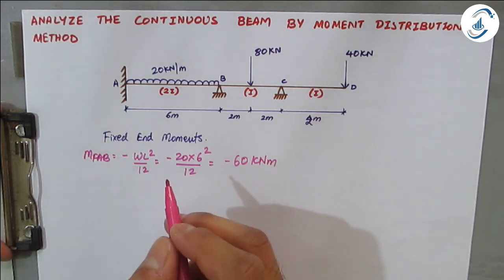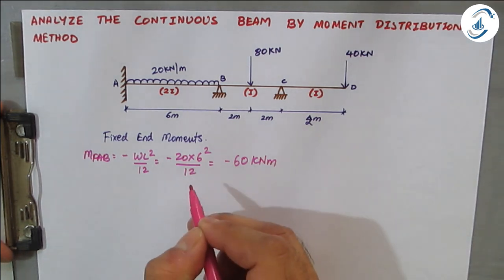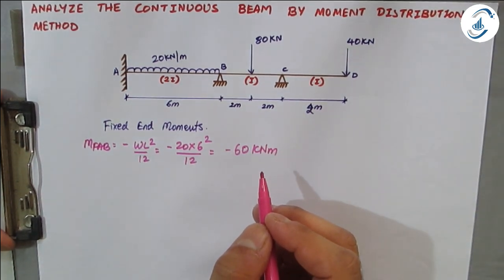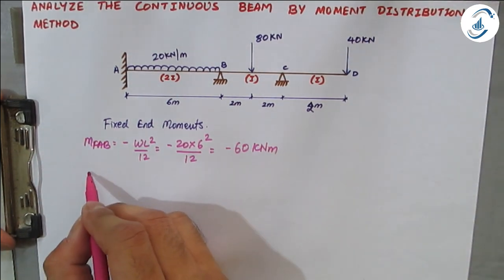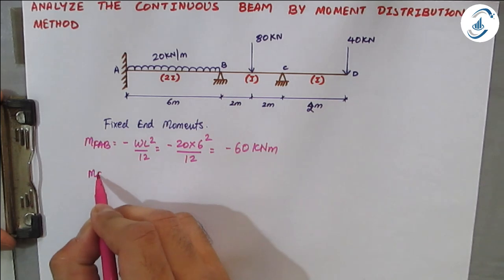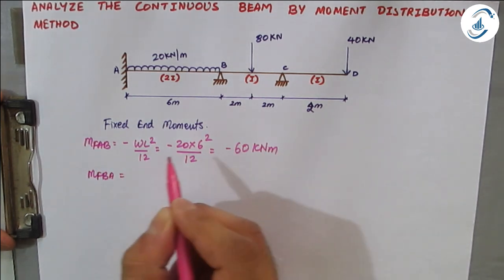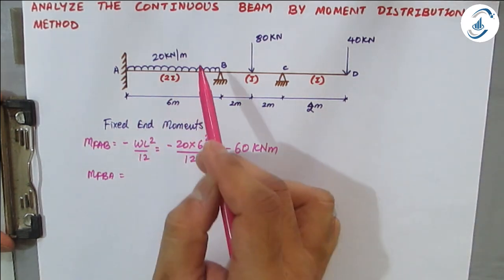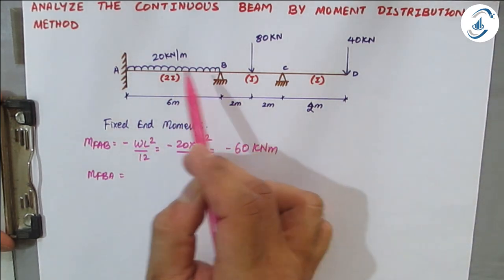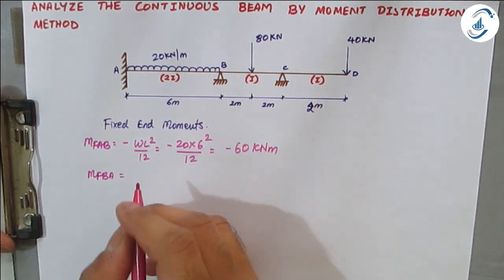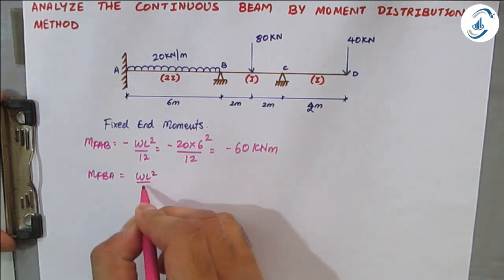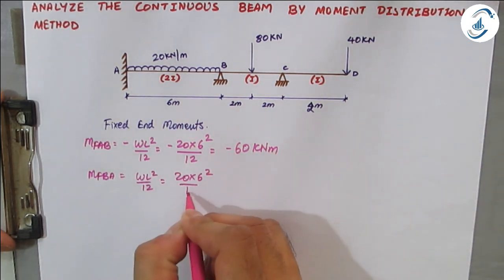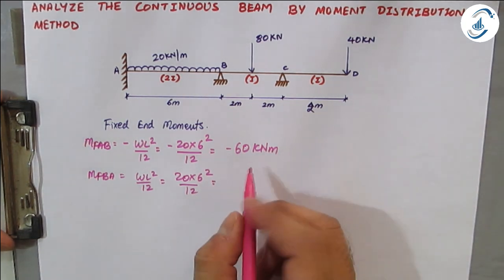As discussed in slope deflection problems, for UDL the fixed end moment is WL²/12. Next, MF_BA is clockwise so positive. Substituting 20 × 6² / 12 gives MF_BA = +60 kilo-newton meter.